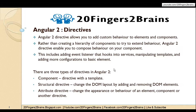There are three types of directives in Angular2. The first one is component — it comes with a template. The second is structural directive, which changes the DOM layout by adding and removing DOM elements. The third is attribute directive, which changes the appearance or behavior of an element, component, or another directive.